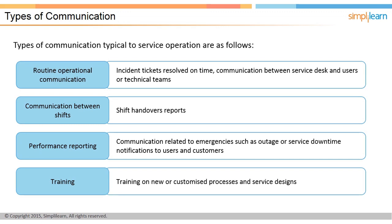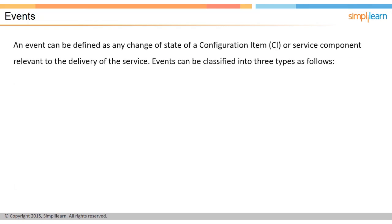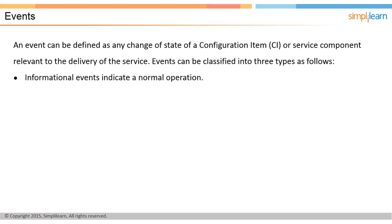In the next screen, let us discuss the types of events. An event can be defined as any change of state of a configuration item or component of the service relevant to the delivery of the service. Events are typically notifications created by an IT service, a CI, or a monitoring tool. Events can be classified into three types: informational, warning, and exceptional.